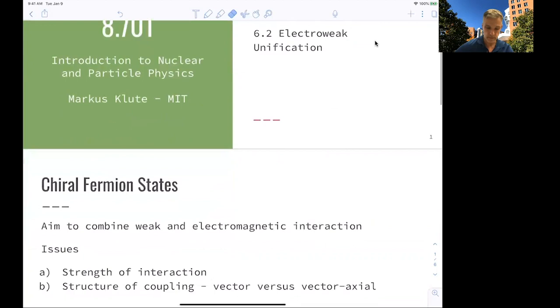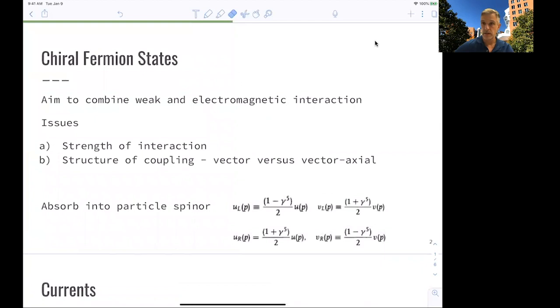Welcome back to 8.701. In this section, we look at electroweak unification. The aim is to combine the weak and the electromagnetic interactions.